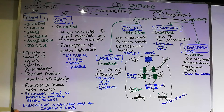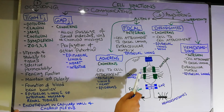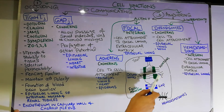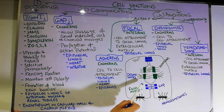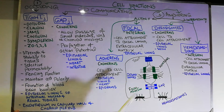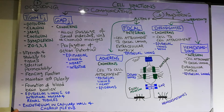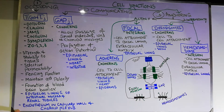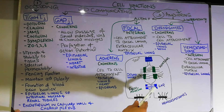The intercellular junctions include tight junctions, gap junctions, adherence junctions, and desmosomes. These are basically the intercellular junctions — they are between cells.